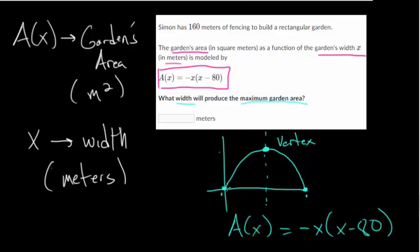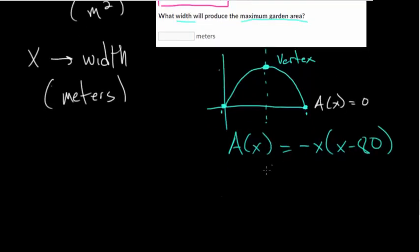To find these intercepts, remember, this is just when your function, or your area, is equal to zero. So which width values would give you an area equal to zero? We can set this equal to zero and then use our zero product property.